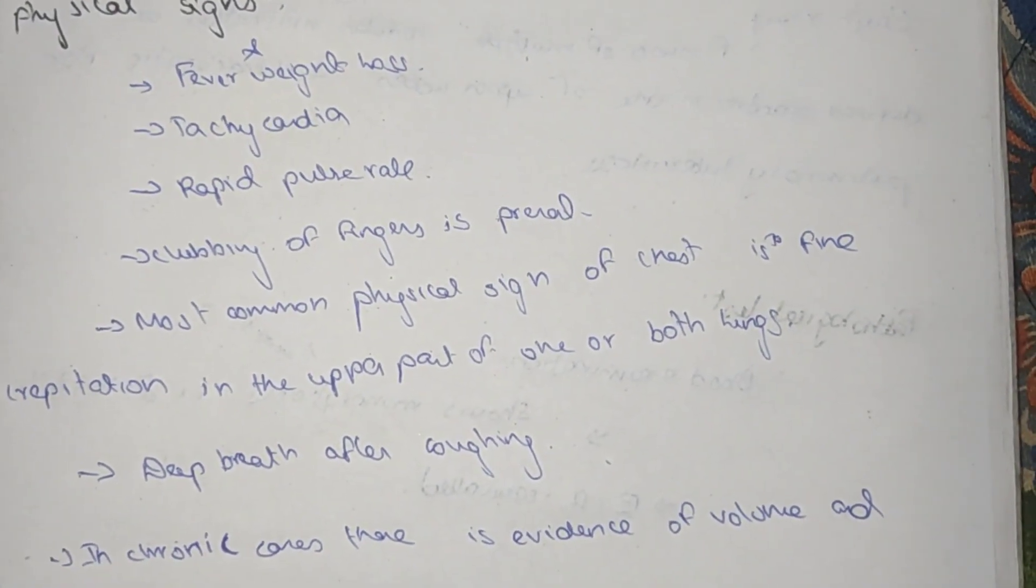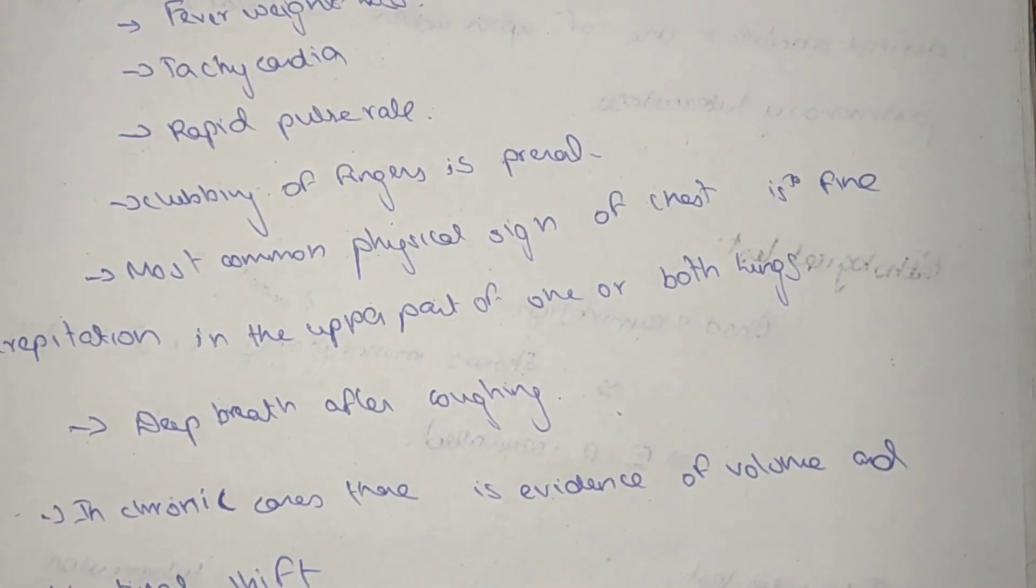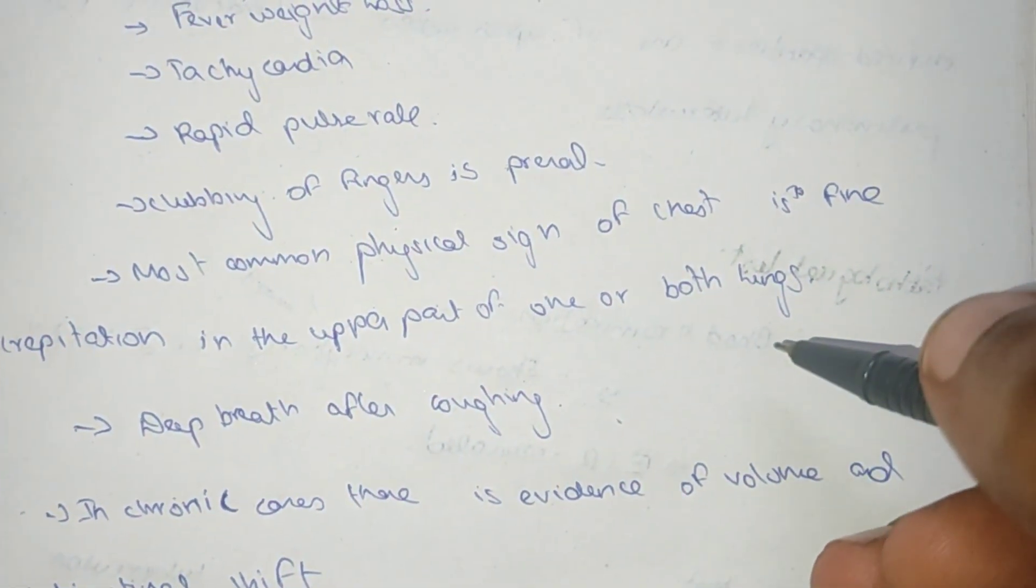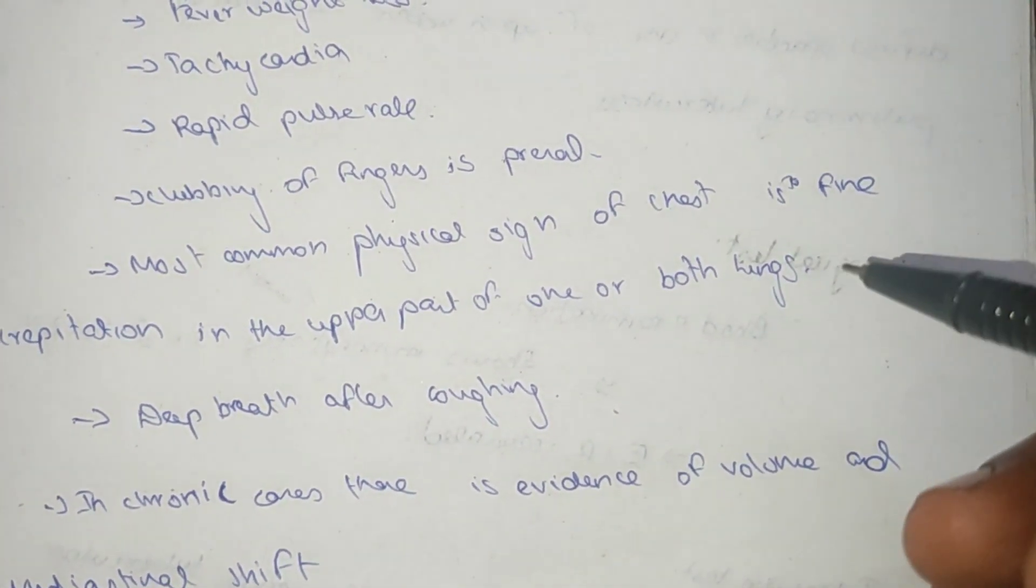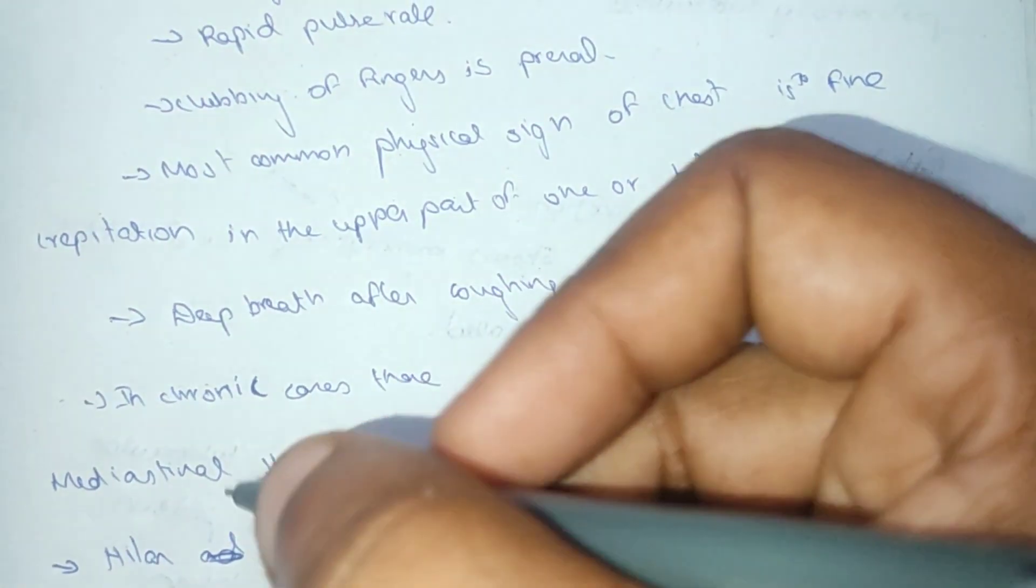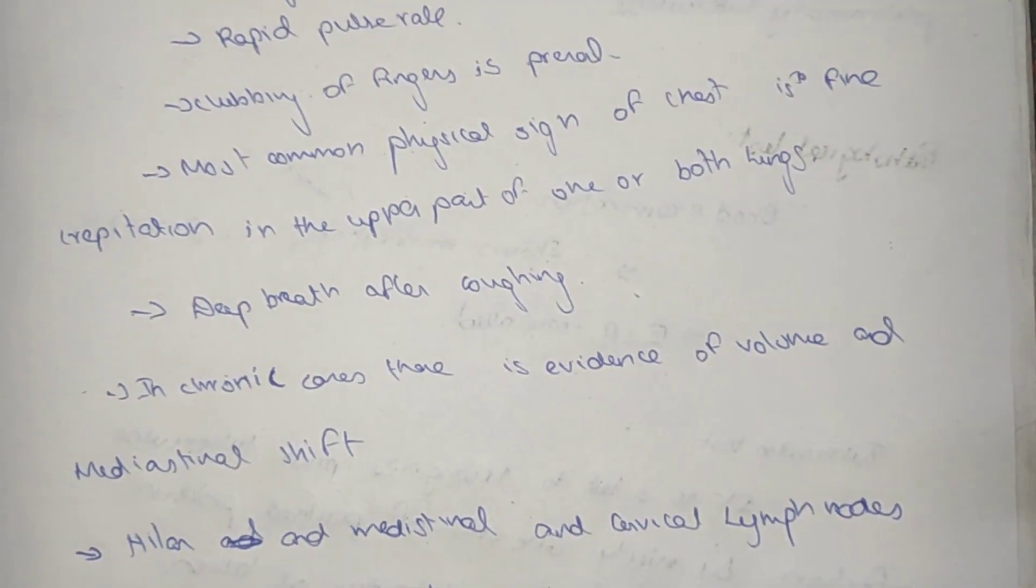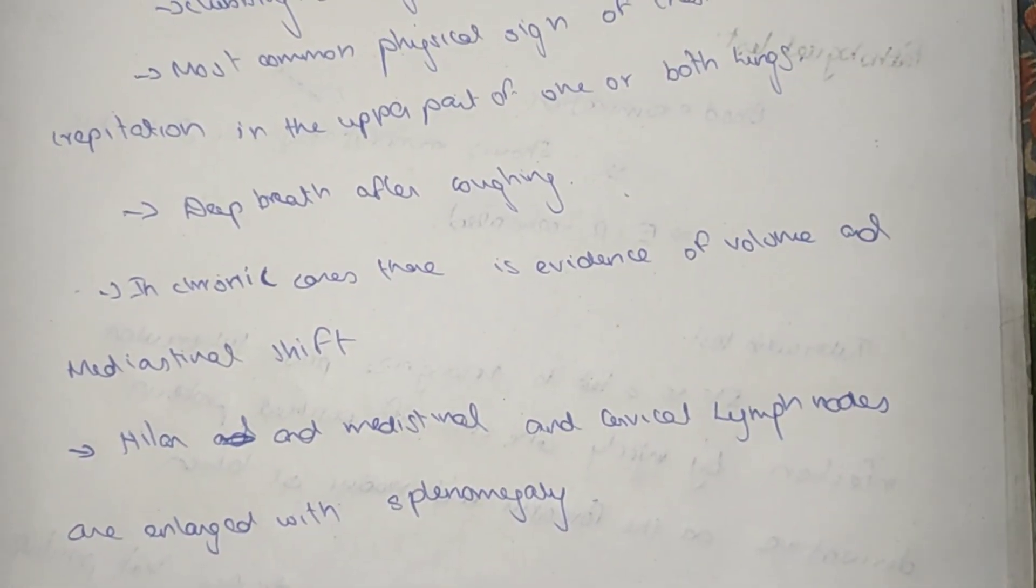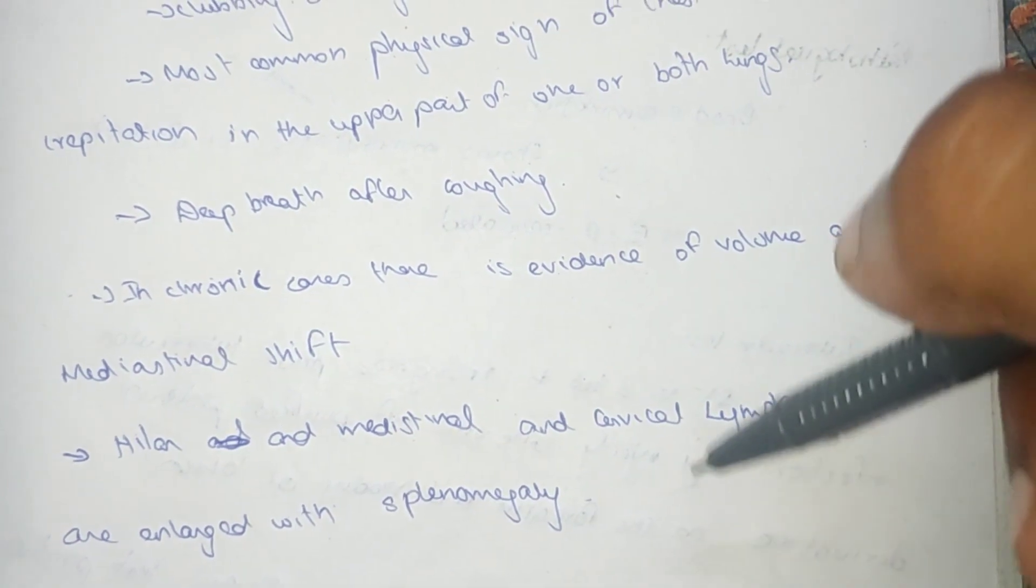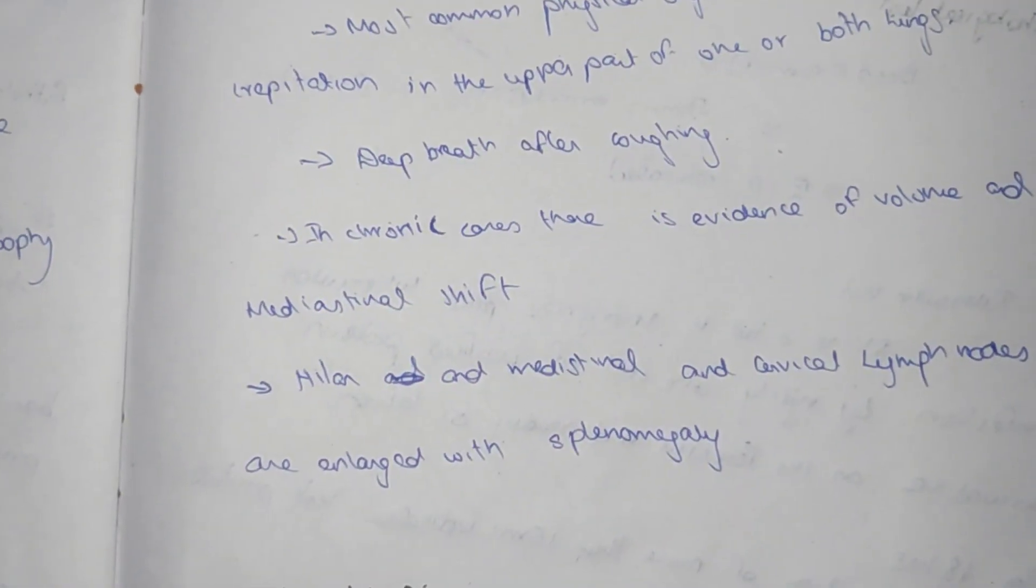Physical signs: fever with weight loss, tachycardia or increased heart rate, rapid pulse rate, clubbing of fingers. Most common physical sign of the chest is fine crepitation in the upper part of both lungs. Deep breath after coughing. In chronic cases, evidence of volume loss and medial shift are seen. Lymph nodes are enlarged with splenomegaly - hilar, cervical, and mediastinal lymph nodes.